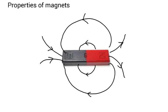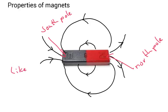The rules with magnets are that like poles repel. So this is called the south pole, and here we've got the north pole. Like poles repel.